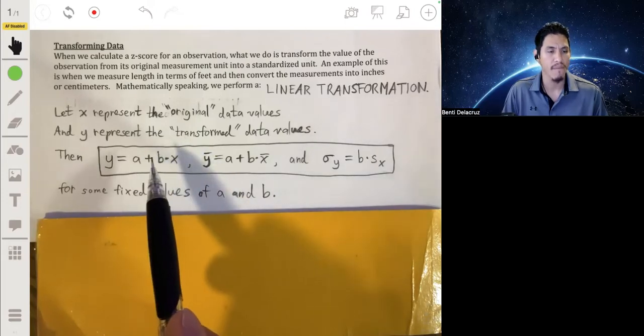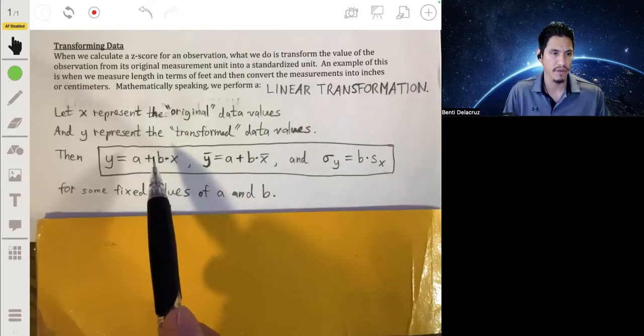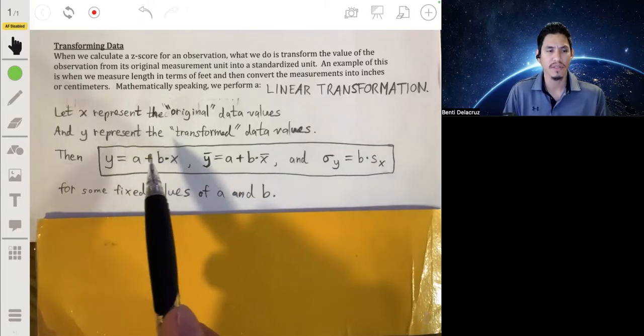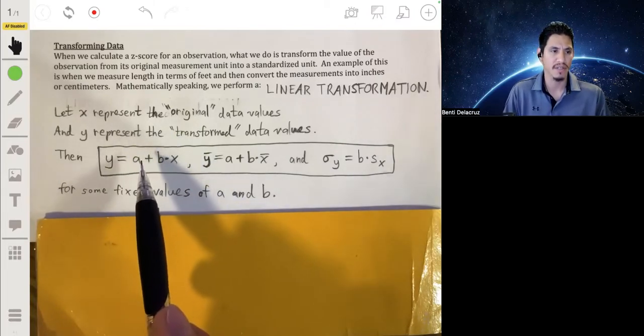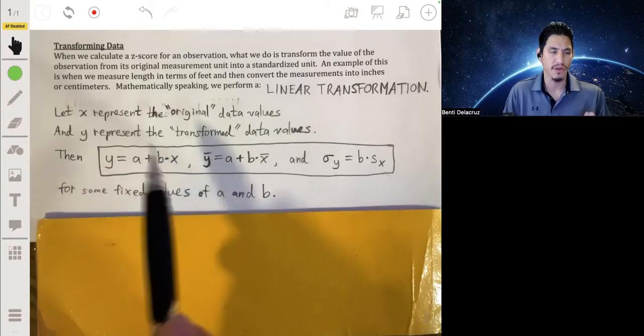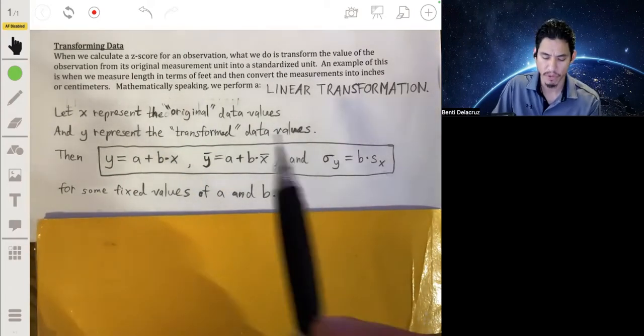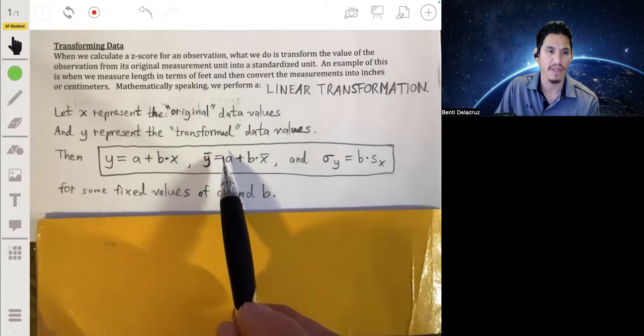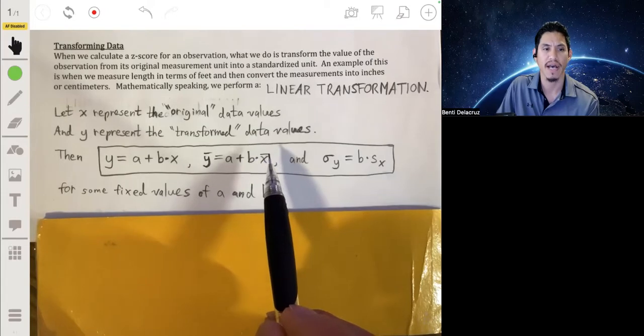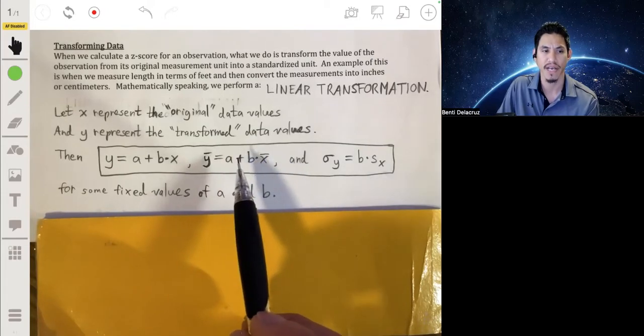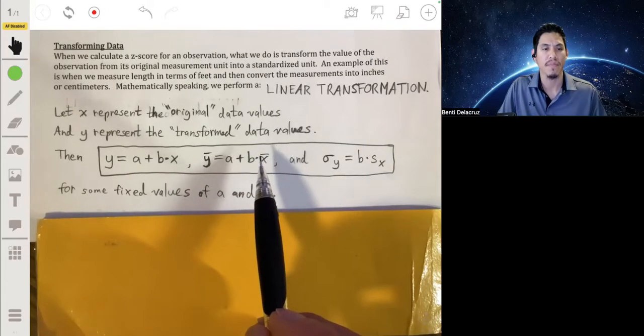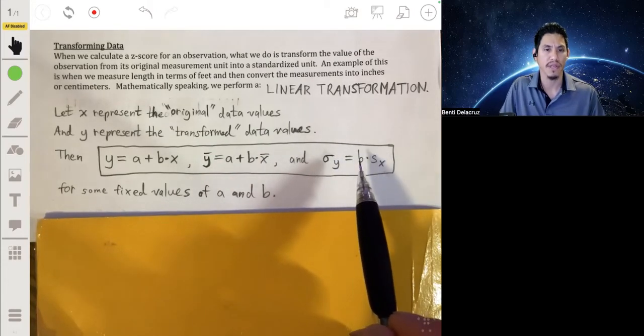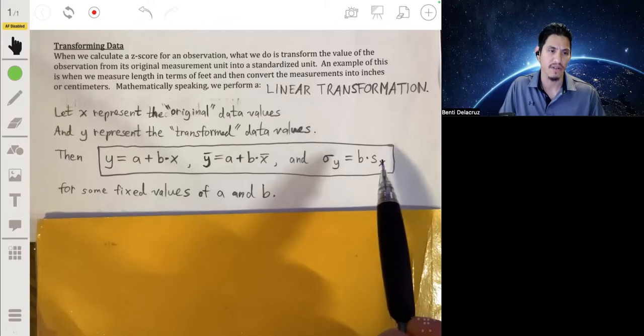A and B are fixed values that could be any real number. This is kind of just like what you learn in the algebraic slope intercept form. A is like the Y intercept, B is just a slope when you graph it on the XY plane. Now, when this occurs, the mean of Y, so Y bar is going to be equal to A plus B times X bar. So the mean of Y is equal to A plus B times the mean of X. And the standard deviation of Y will be equal to B times the standard deviation of X.